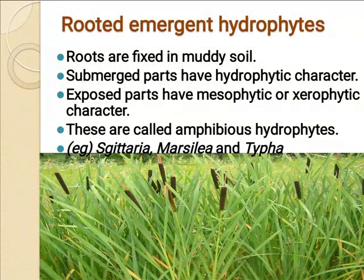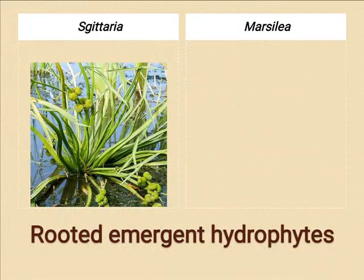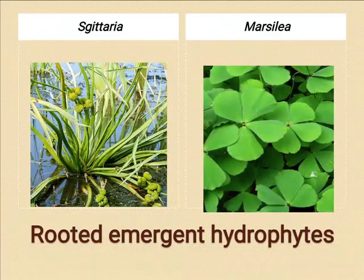This is Typha, also a best example for rooted emergent hydrophytes. Sagittaria and Marsilea are also well-known examples. In Sagittaria, you can see both dissected and well-developed leaves. Marsilea is a well-known example for rooted emergent hydrophytes.